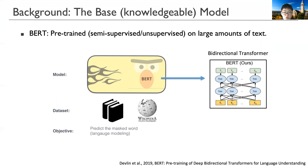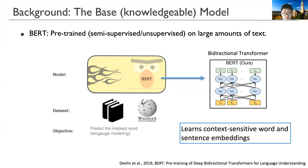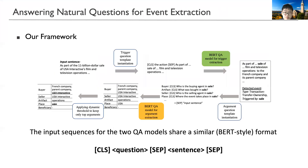We use a pre-trained BERT model as the base model for our framework. BERT is pre-trained in an unsupervised fashion on text from books and Wikipedia, and the transformer learns context-sensitive word and sentence embeddings. In our framework, we build two BERT-based QA models — one in green for trigger extraction and another in orange for argument extraction. Input sentences share a similar format where the question and sentence are concatenated by a separator token, and we include a question template instantiation step before feeding input to the models.